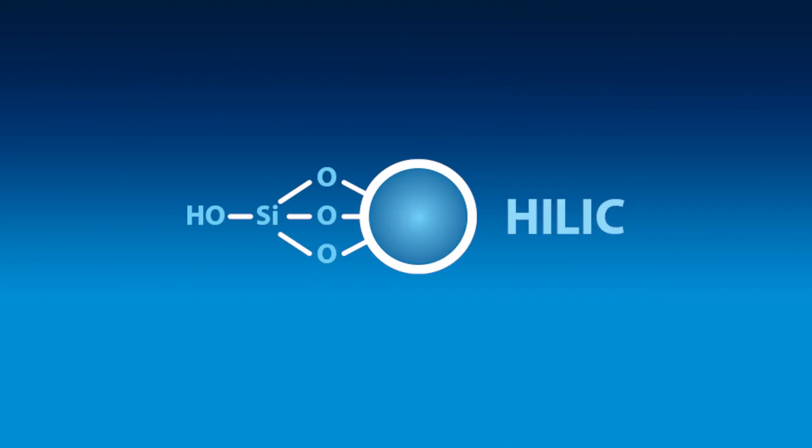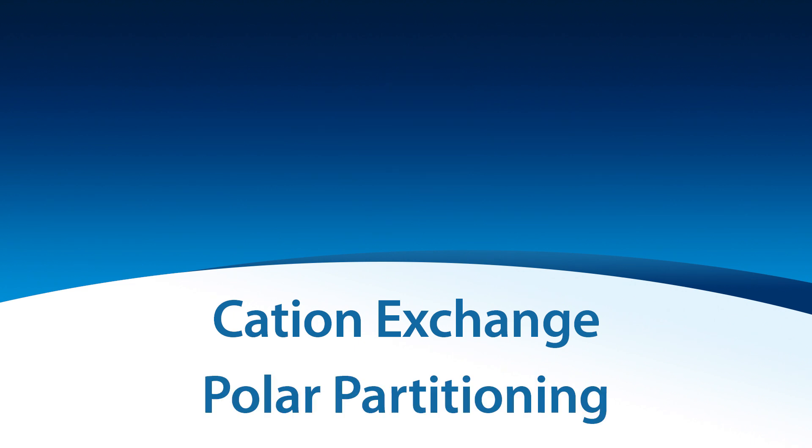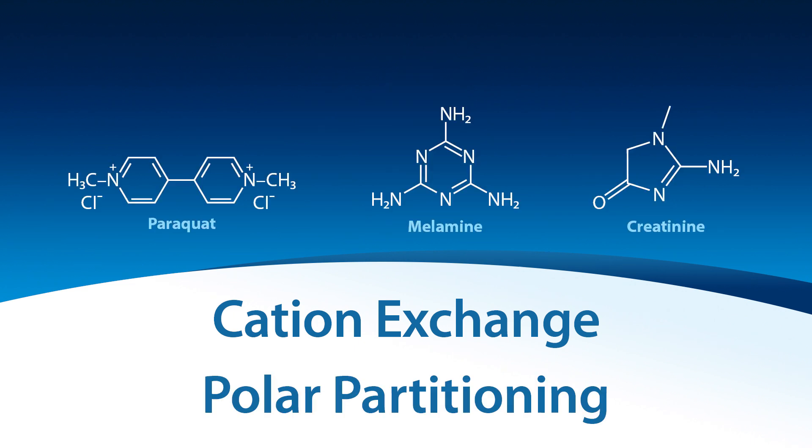If your compounds are too polar for reverse phase chromatography, HILIC stationary phases such as HILIC-SI could be your answer. HILIC-SI uses a synergistic combination of both cation exchange characteristics and polar partitioning to retain compounds such as paraquat, creatinine, and melamine.